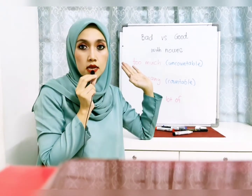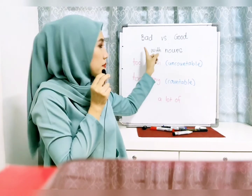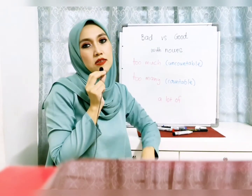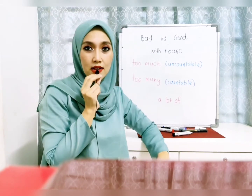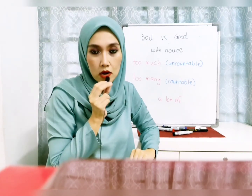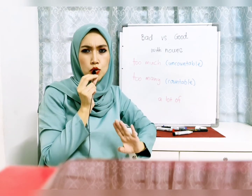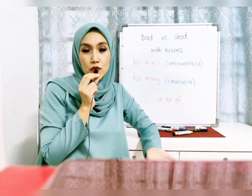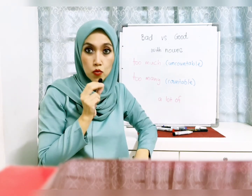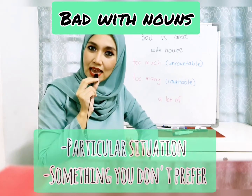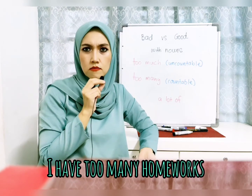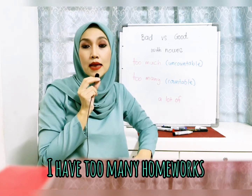But have you ever asked yourself when we're going to use 'too much' versus 'too many'? You know that 'too much' is for uncountable and 'too many' is for countable, but when it comes to bad versus good nouns, there will be a slight difference in usage. For example, take the word 'homework'. Is homework a good or bad noun? Definitely, we know that homework is good — but in your opinion, do you love homework? I believe as a student, you hate homework. So we can consider it as a bad noun. So you can say: I have too many homework — you use 'too many' for bad nouns.